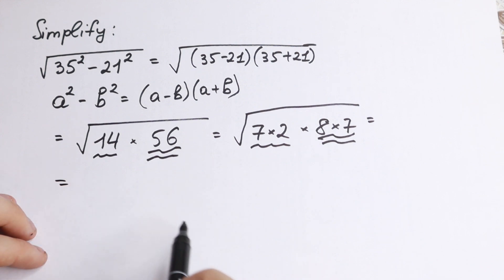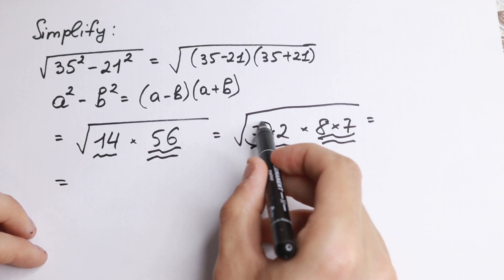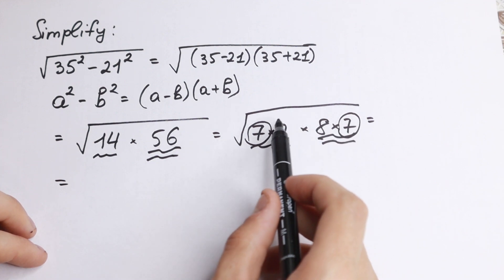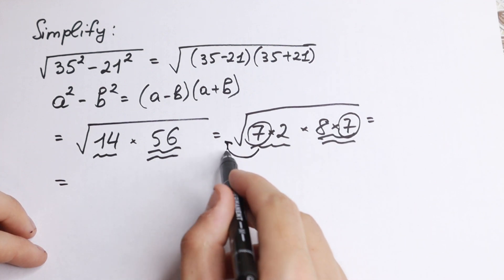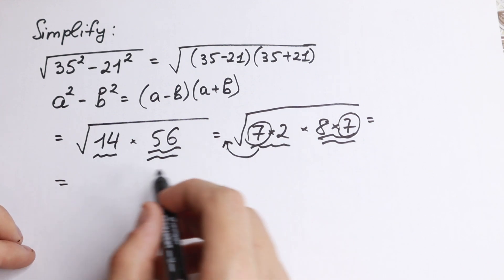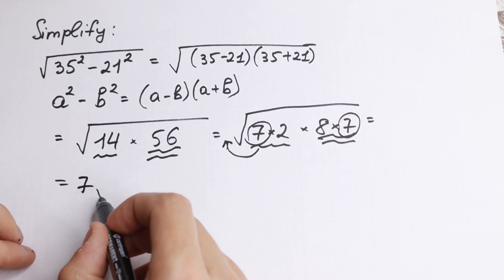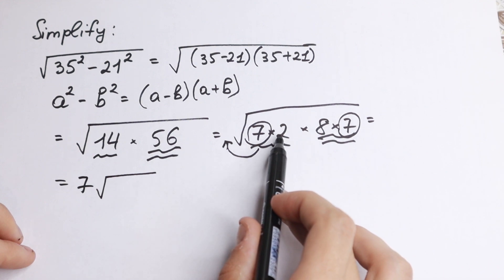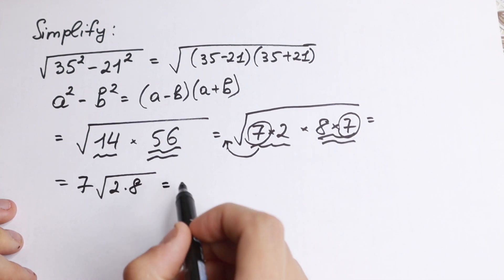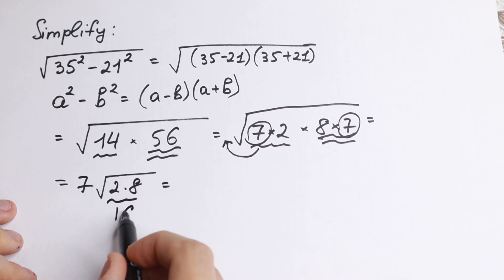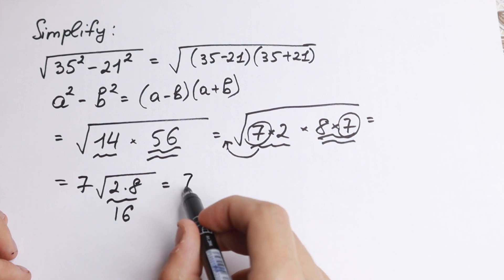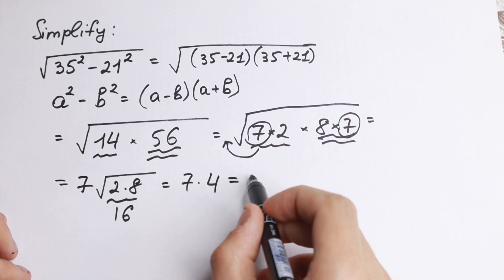So what we're going to do next? Take a look closely. We have 7, and we have 7 as well. If we multiply, we have 49. We can bring this 49 outside the square root, but we need to find this square root. Square root of 49 is 7. And in our square root sign, we'll have 2 times 8, which equals 16. Square root of 16 equals 4, so 7 times 4 equals 28.